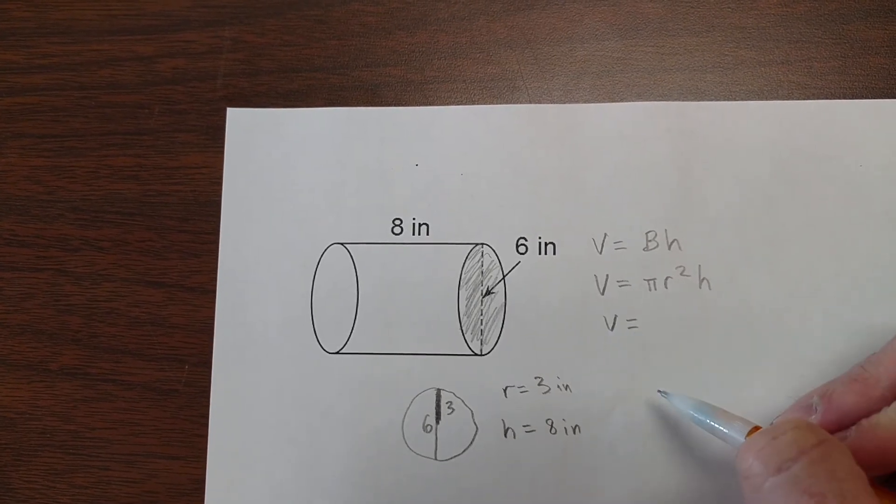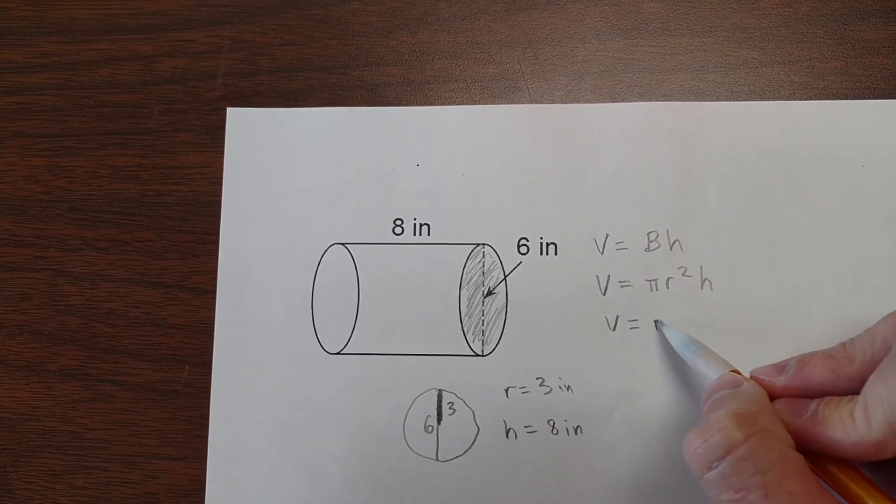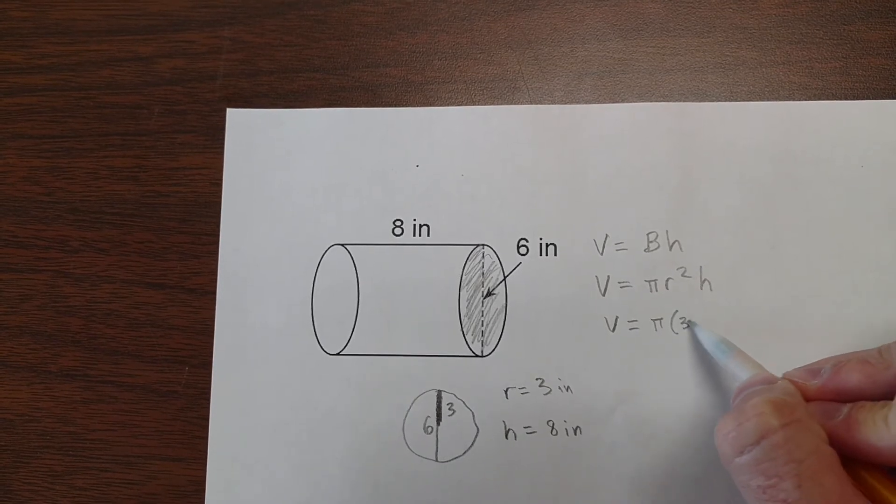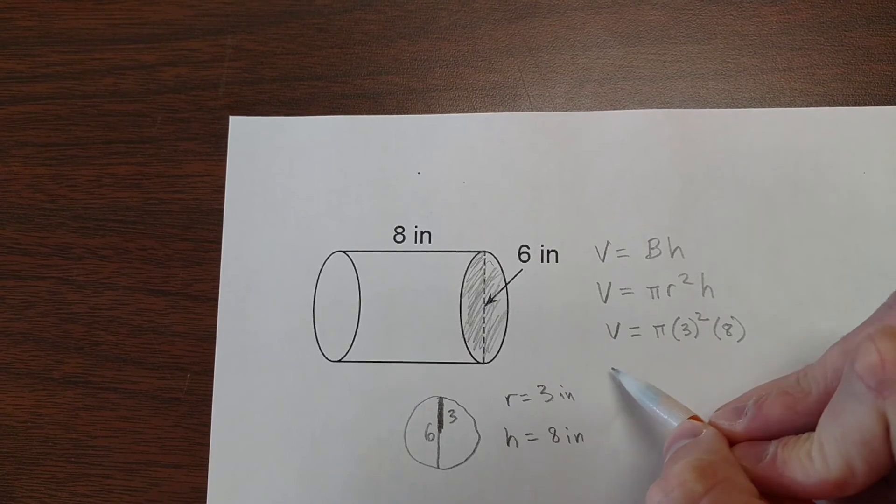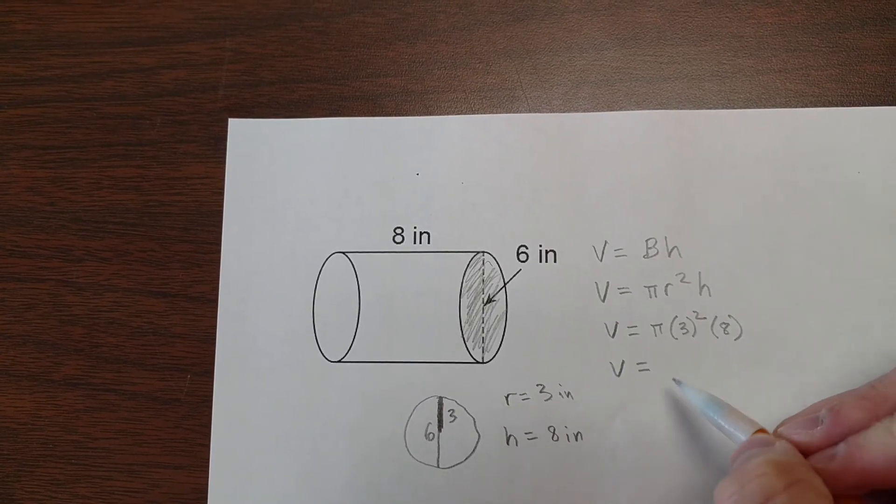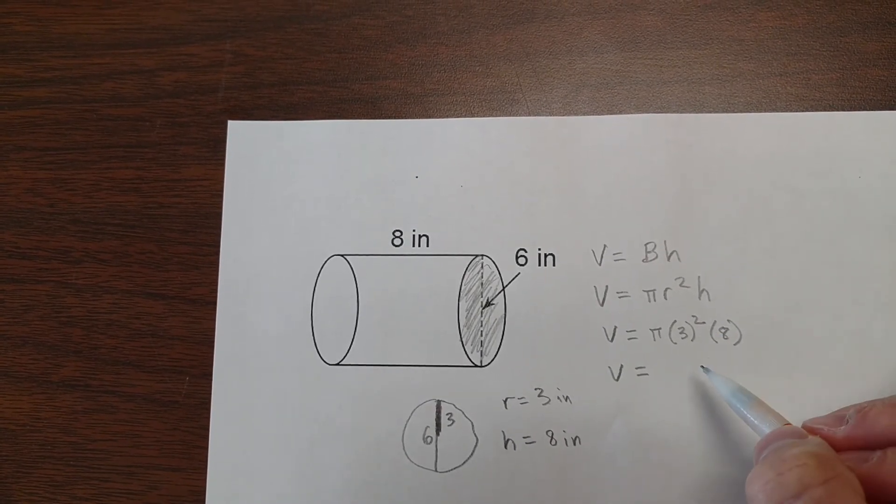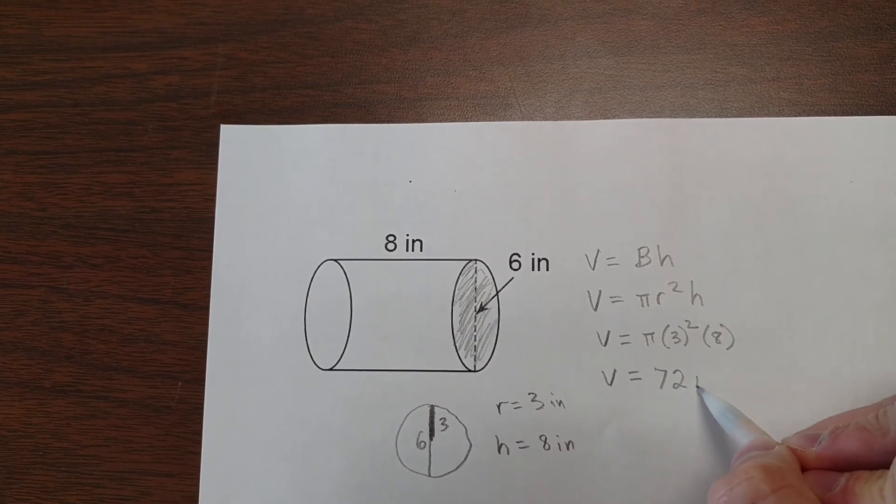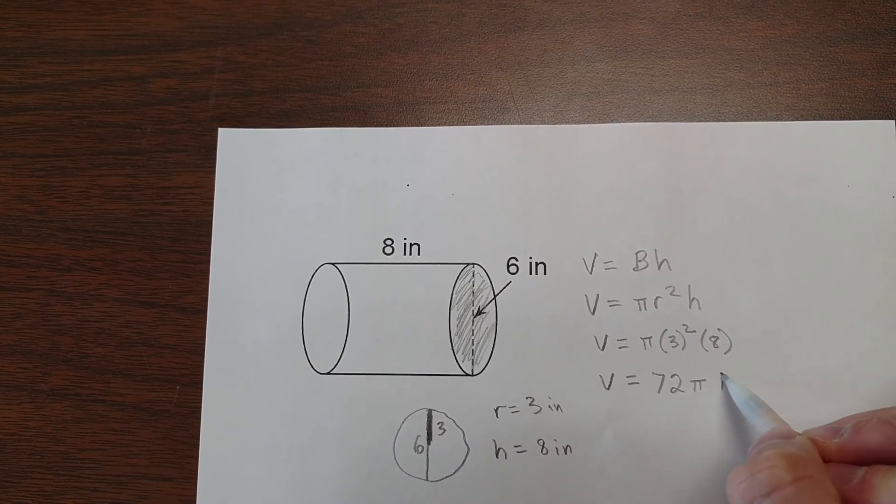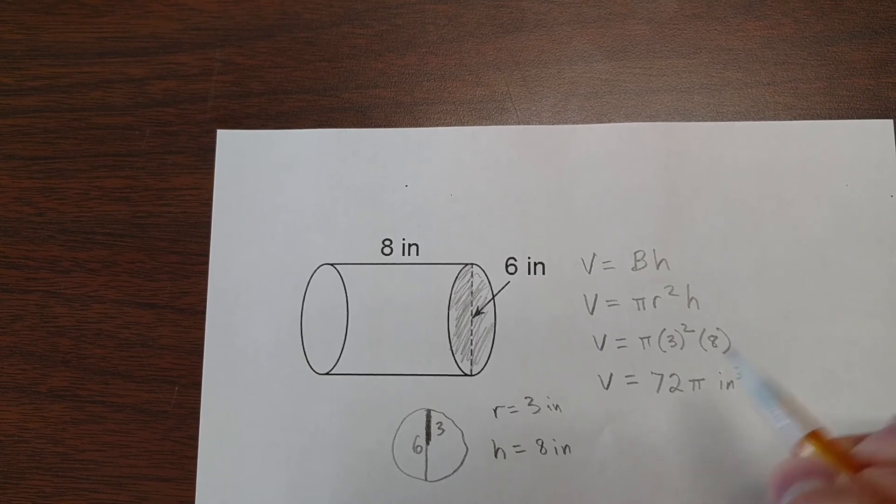So, inserting this into our formula, we will have pi times the radius of three squared times the height of eight. We'll end up with three squared is nine times eight is seventy-two. So we'll have a volume of seventy-two pi inches cubed.